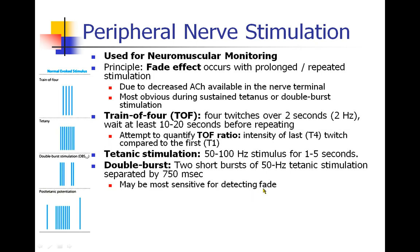Something we don't see very often, but some stimulators have it, is double burst stimulation. This is usually two short bursts of tetanic stimulation about 750 milliseconds apart. You look at the ratio of the intensity of the second burst compared to the first burst. This may actually be the most sensitive for detecting fade, but for some reason we don't really use it very often clinically.